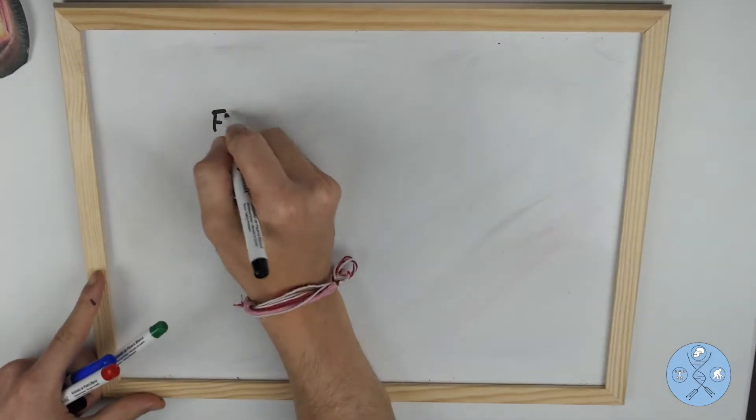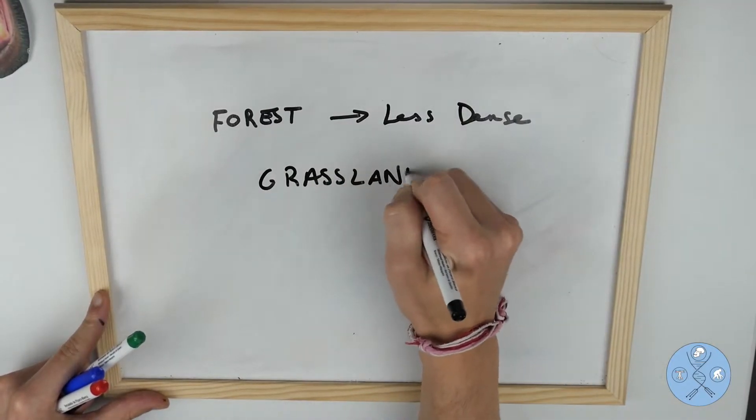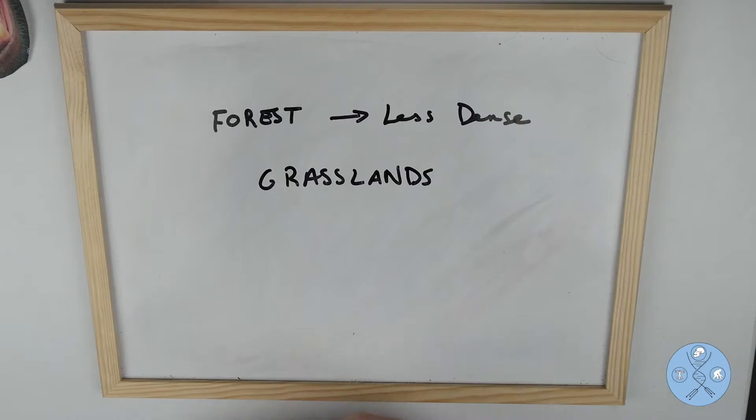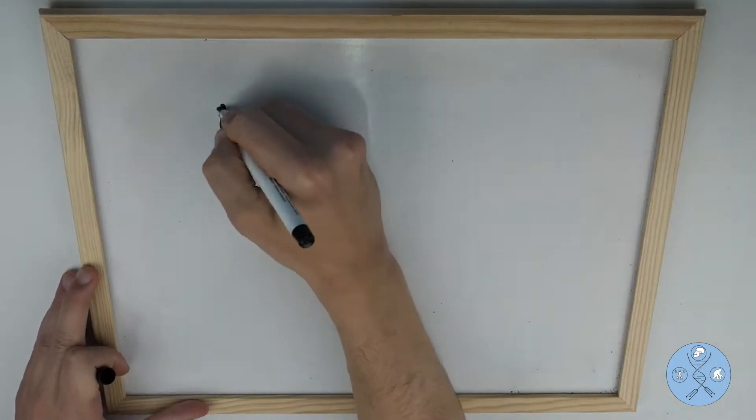Hominin evolution began in Africa at this time. The forests became less dense and grasslands appeared between tree patches. The common ancestor of modern humans and chimpanzees probably lived in dense forests and its descendants became adapted to live in the ground and in the new habitat that was gradually appearing.